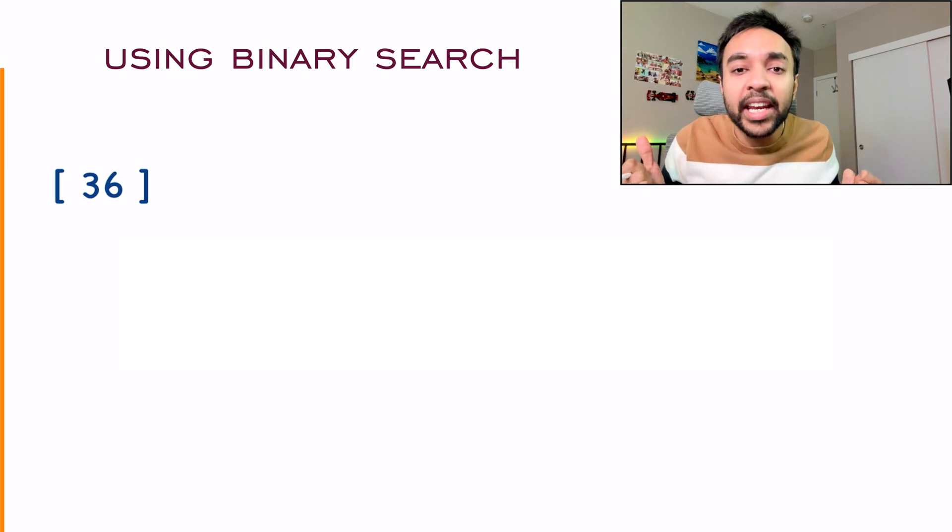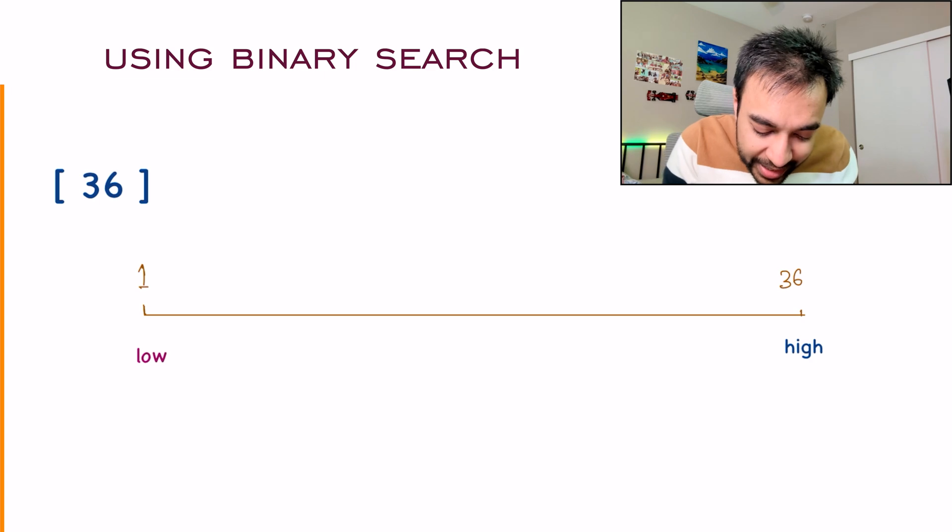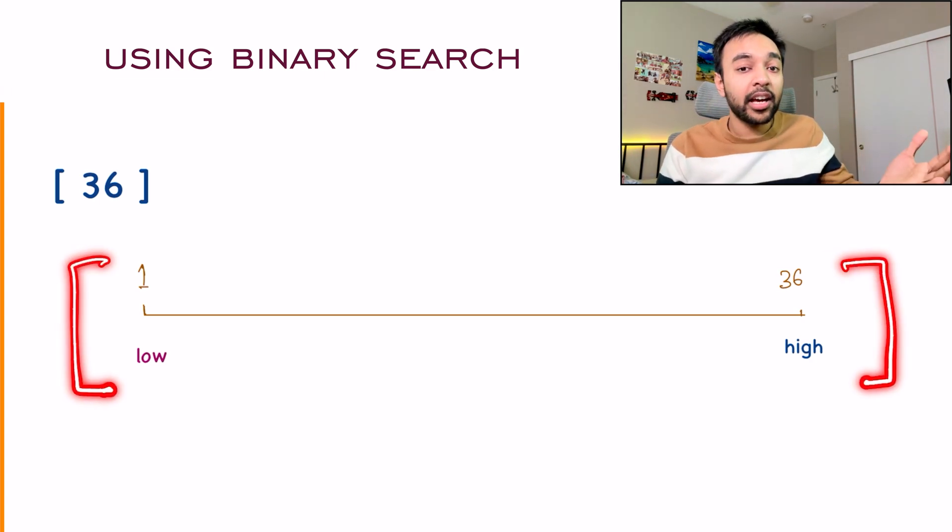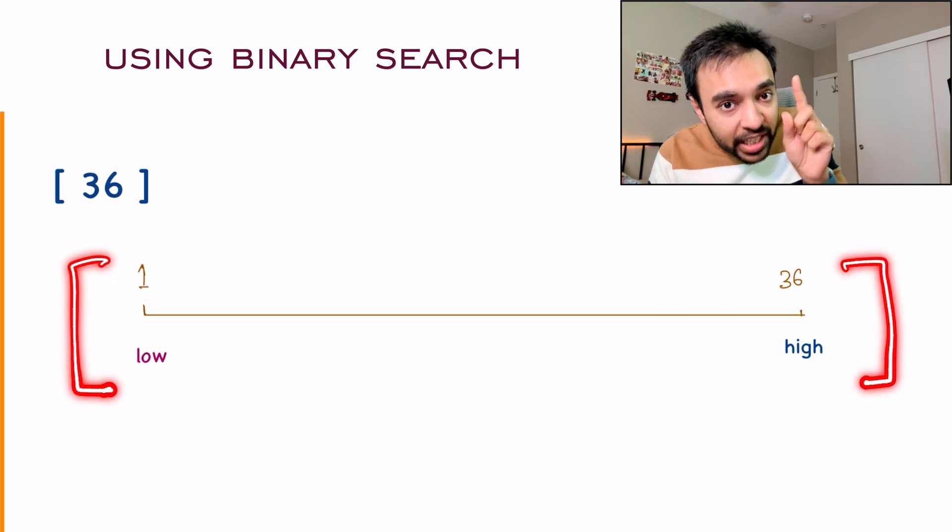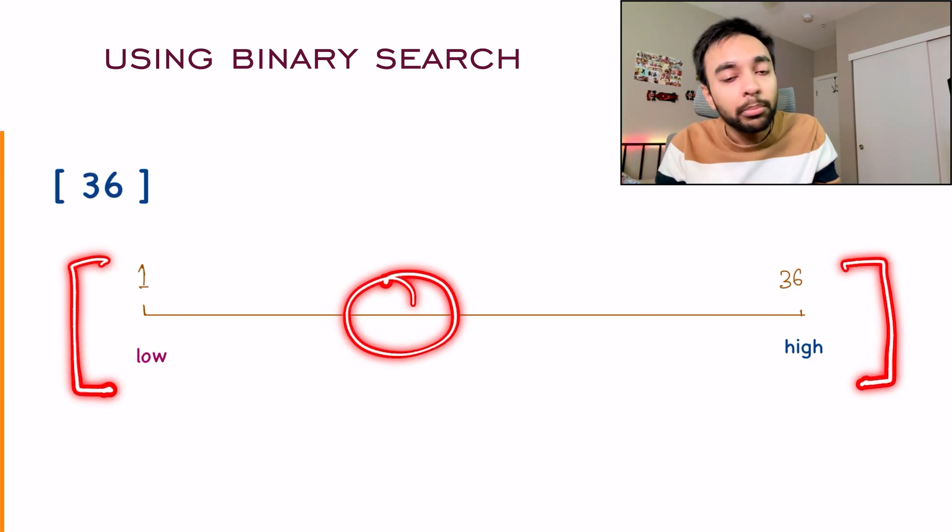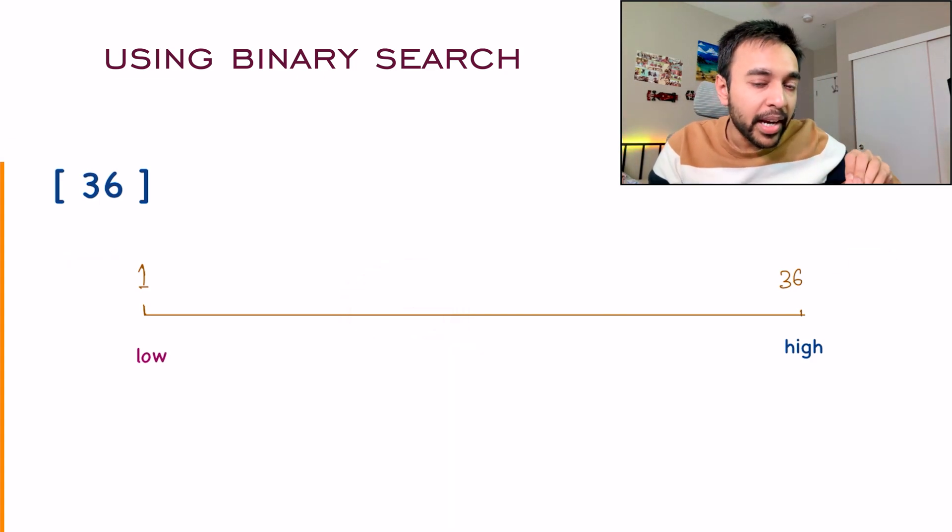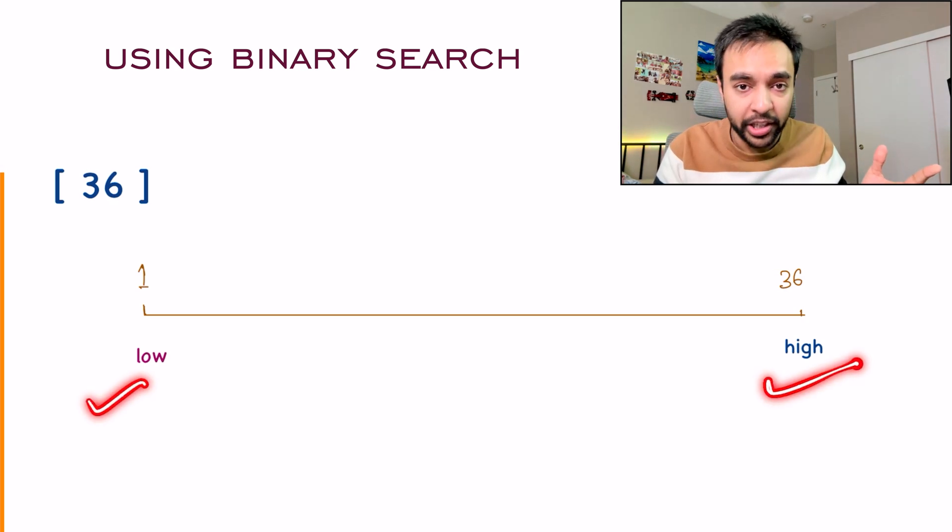But over here, where is the array? What you can do is you can take up a number line. In this number line, the low will be 1 and high will be 36. You know that if this number is a perfect square, you will find the integer somewhere in between. And that is how you can arrive at the answer. So what I am going to do is I am going to apply the binary search technique using these two pointers.